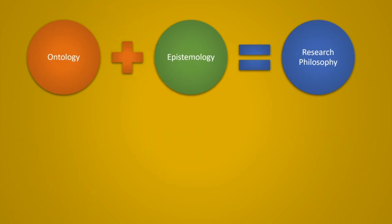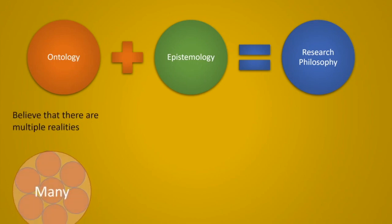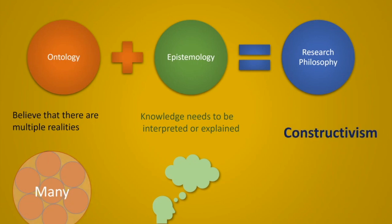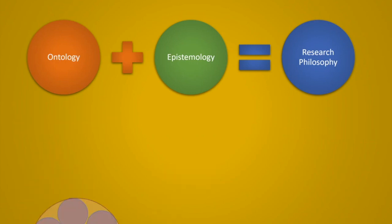The second combination: the ontological belief that truths and realities are many, combined with the epistemological belief that knowledge can be interpreted rather than measured, gives us constructivism. In constructivism, we consider that there are many realities and they can be interpreted or explained. This is a philosophical approach where we mostly use qualitative research.